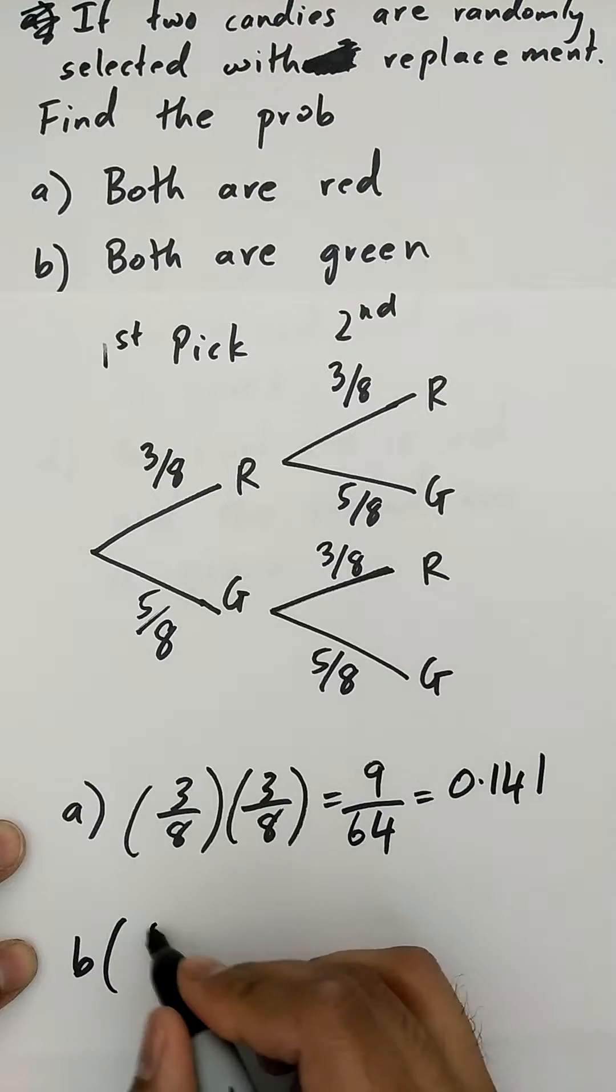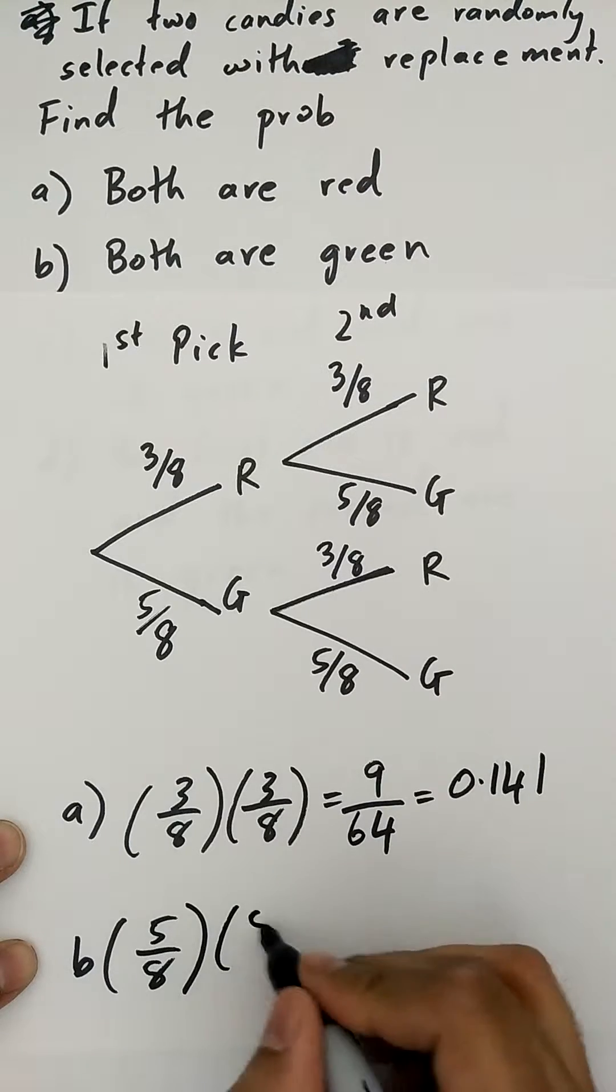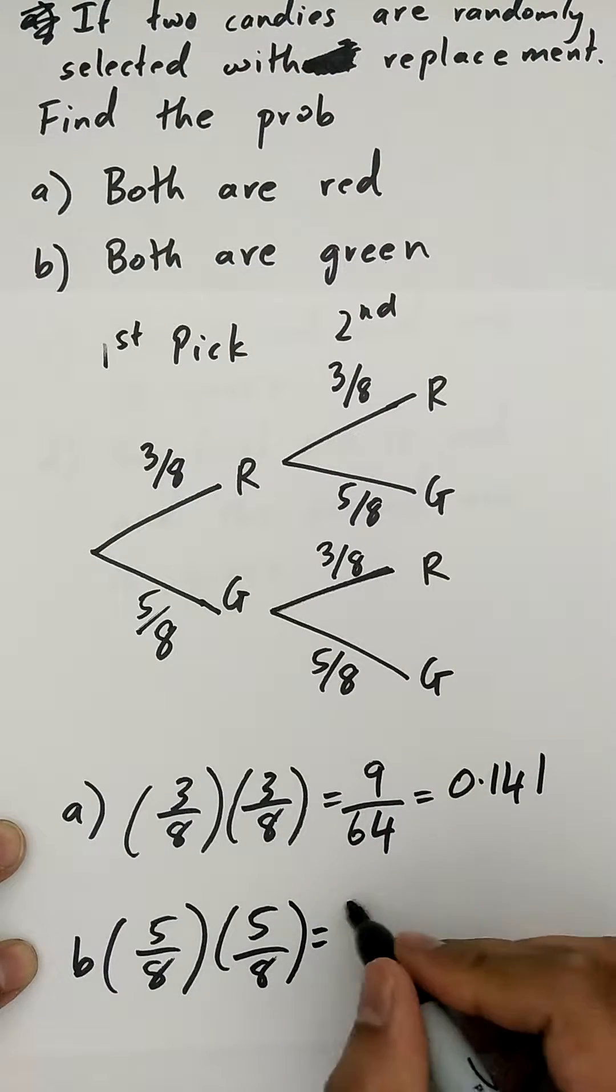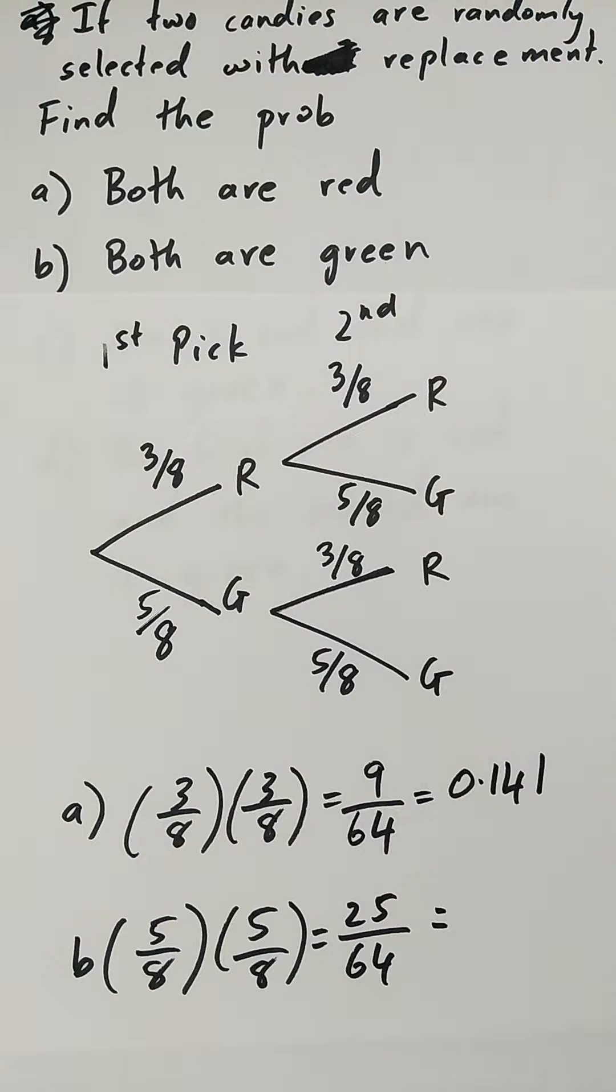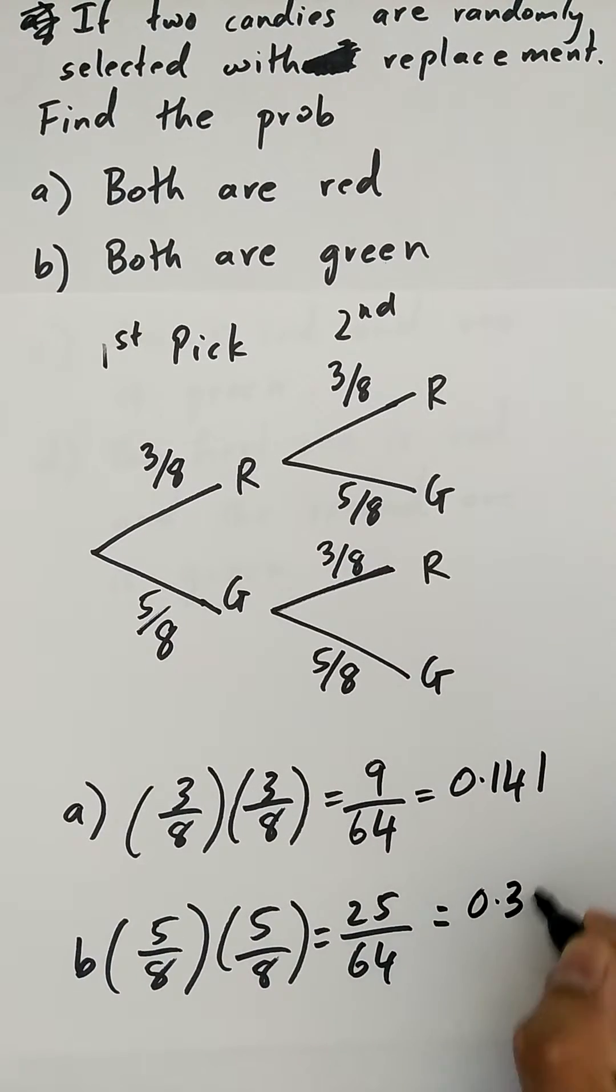What is the probability that both are green? So both are green: 5 over 8 times 5 over 8, which is 25 over 64, 0.391.